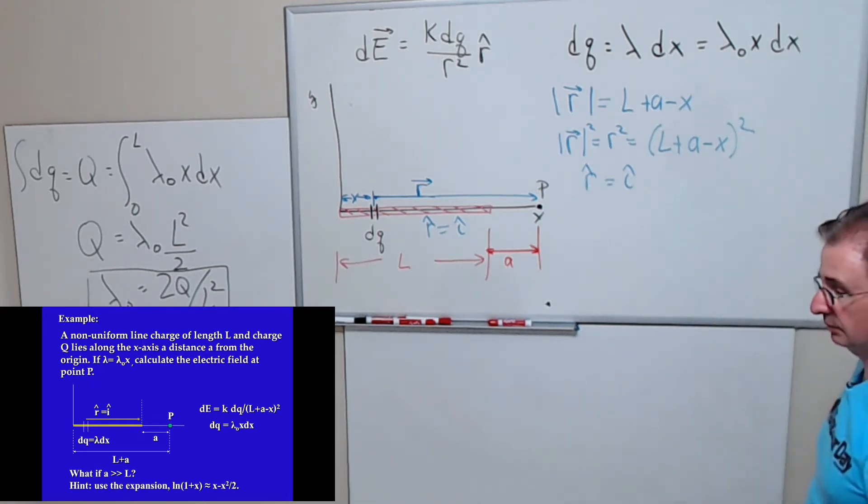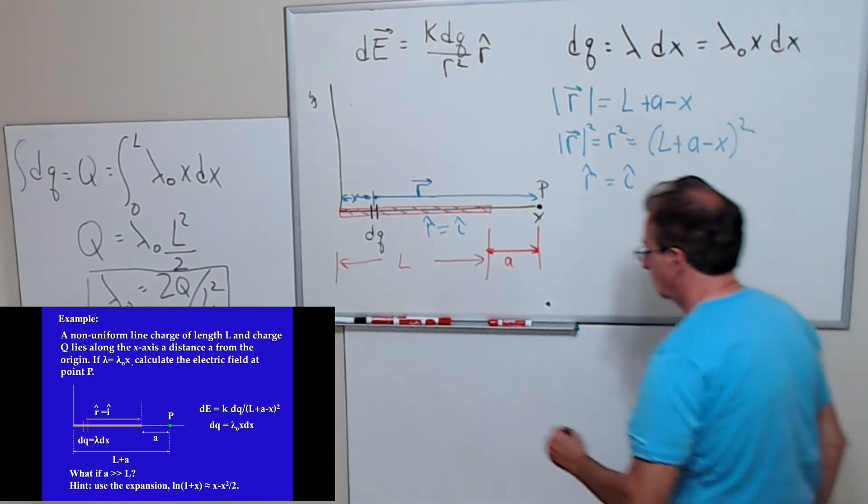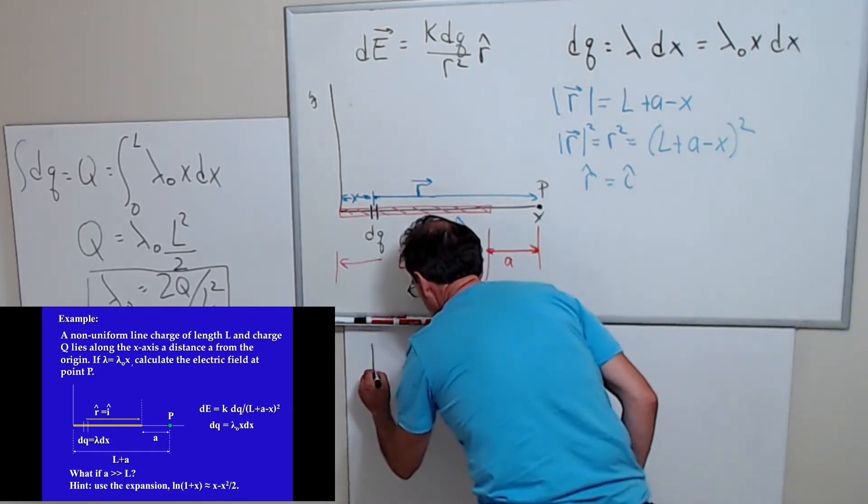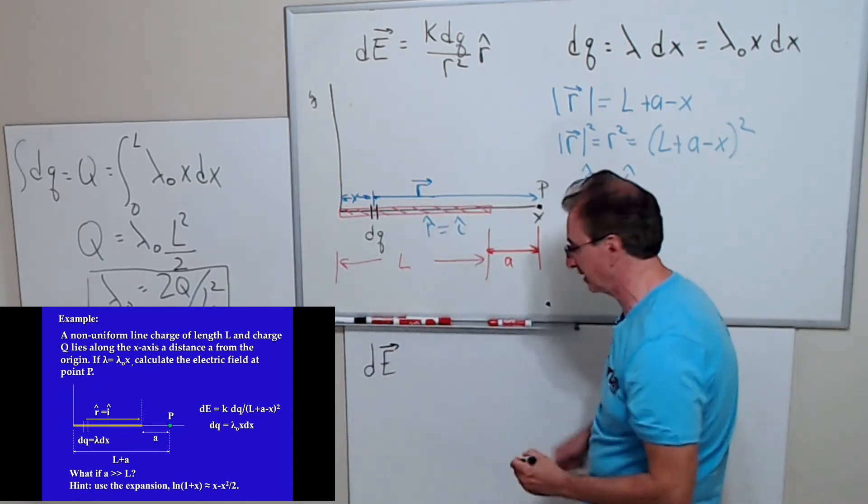Okay, so all we got to do now is put all this together. We'll write down what the integral looks like. We'll actually write down what dE looks like and then we'll integrate it.